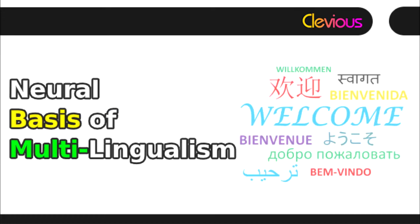Multilingualism is a skill possessed by individuals who can communicate in more than one language. This chapter introduces the neural structures that deal with multiple languages and discusses the factors affecting the neural organization within multilinguals. All people possess the ability to communicate in at least one language, called their native language. These individuals are referred to as monolinguals, and people who can communicate in more than one language are referred to as polyglots.